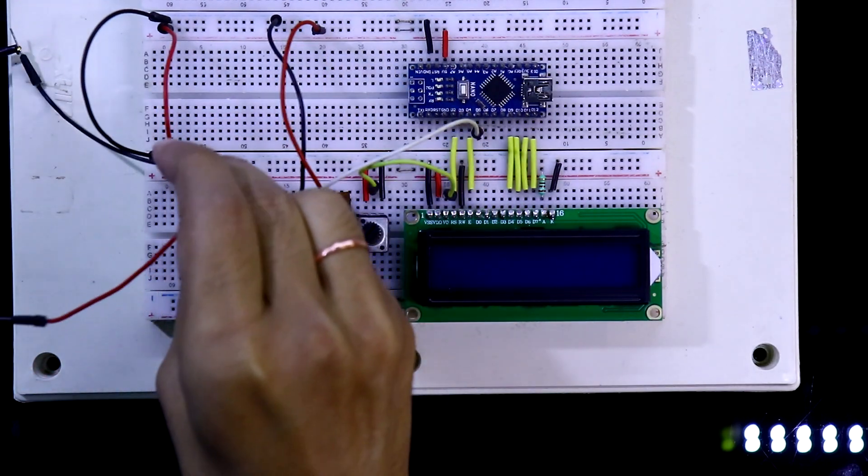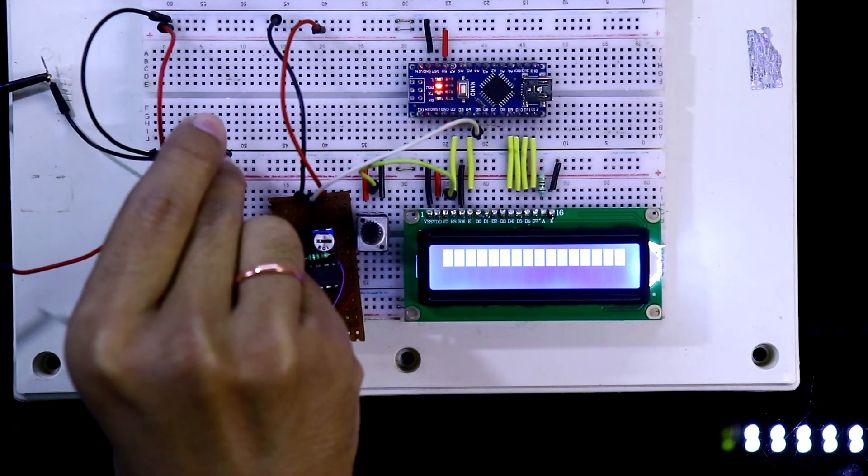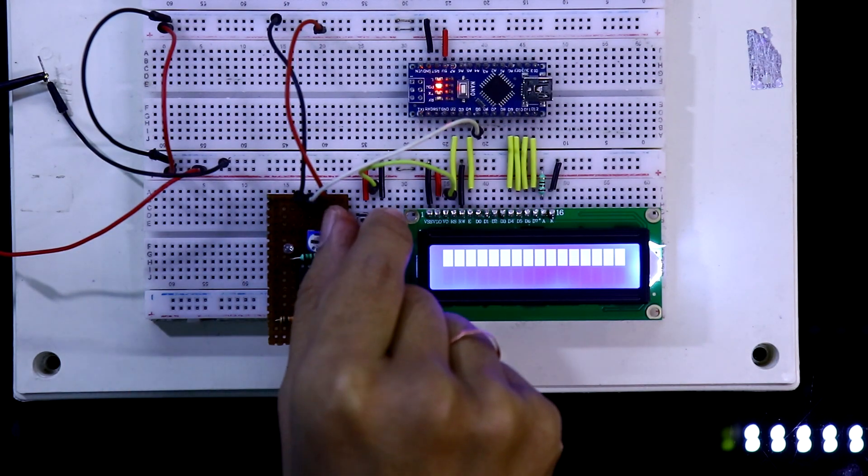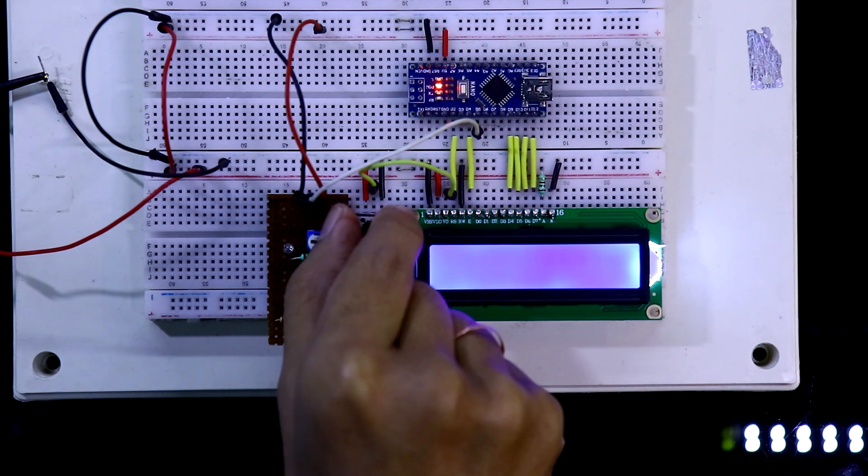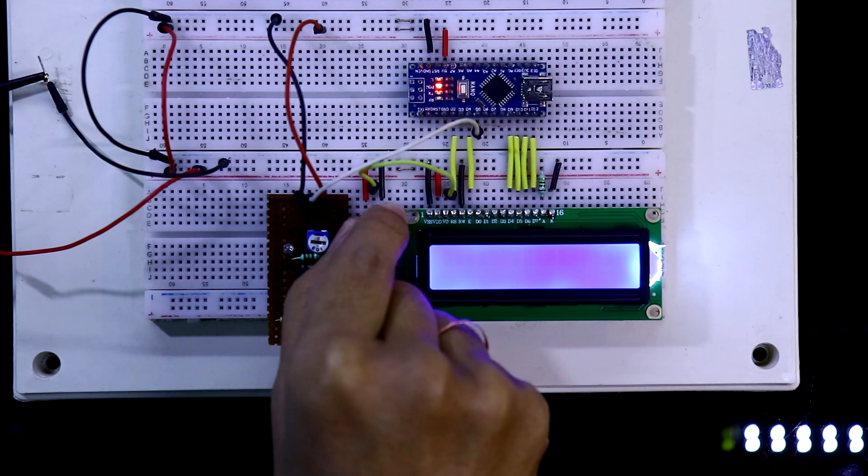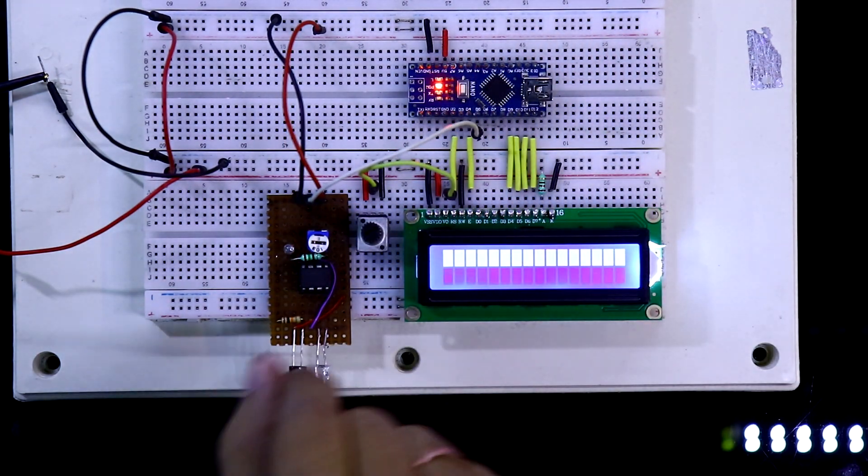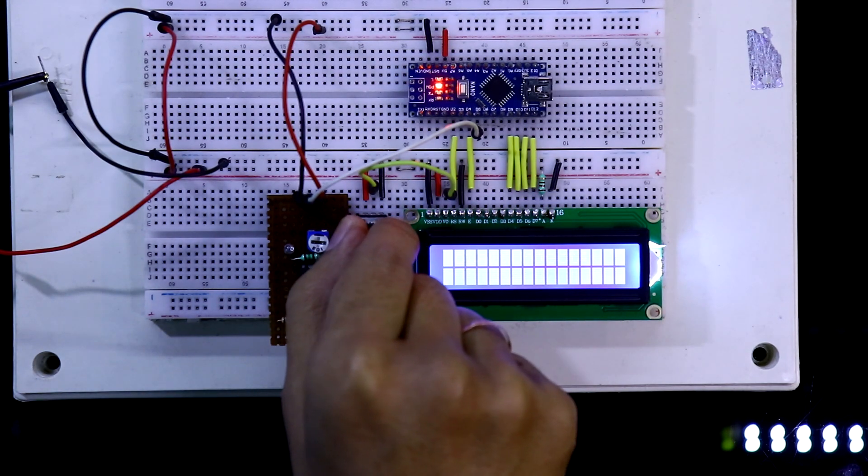Here is negative and positive. Now we have to adjust the potentiometer. Reset it. Now we have to adjust this. OK.